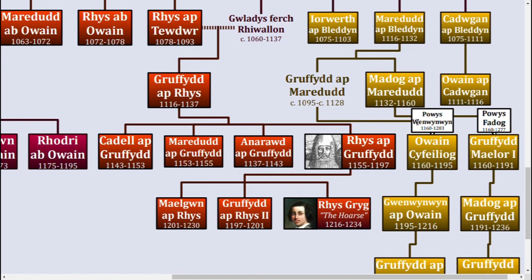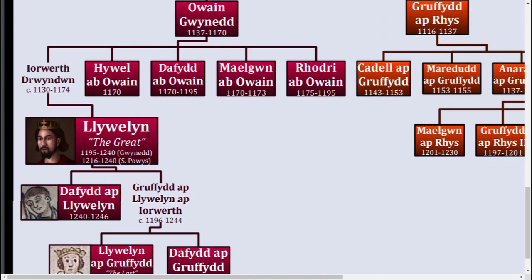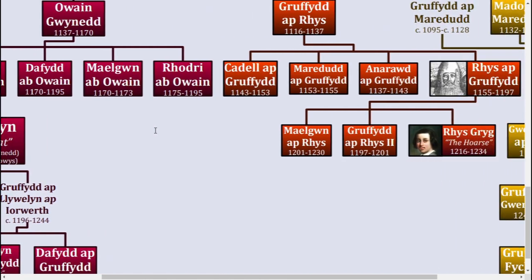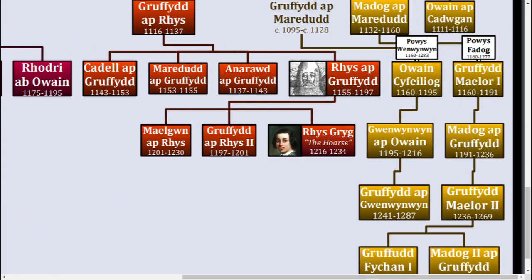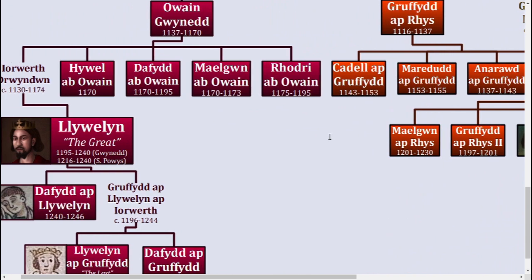The great-grandson of Griffith, Chlewellyn, known as the Great, became a dominant force fighting against King John and his shenanigans in England. And with the permission of Pope Innocent III, Chlewellyn, as well as Gwen Winwin and Rhys Grug, didn't actually have to swear oaths of allegiance to King John, meaning they could conquer all that they liked.